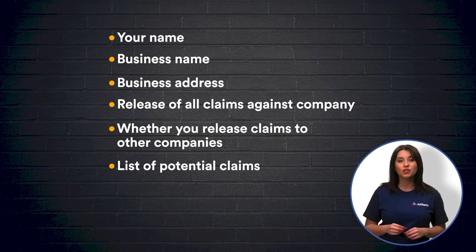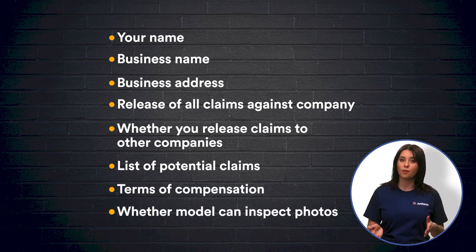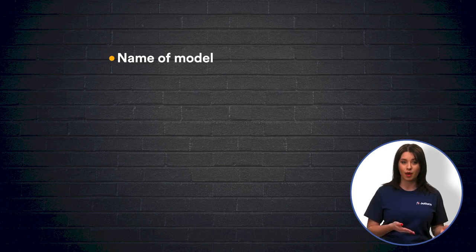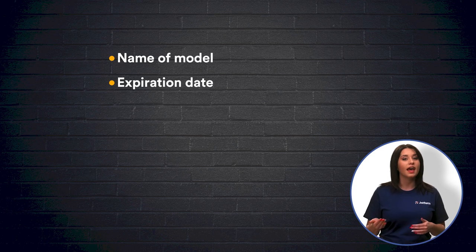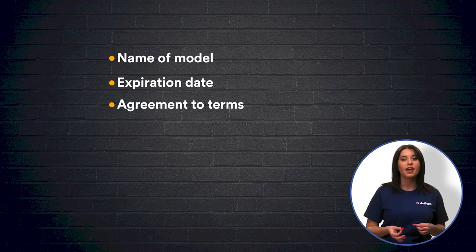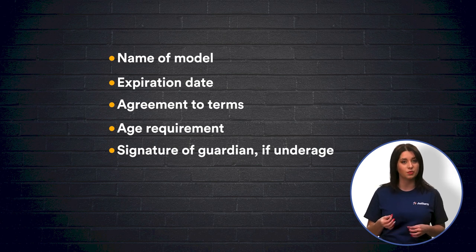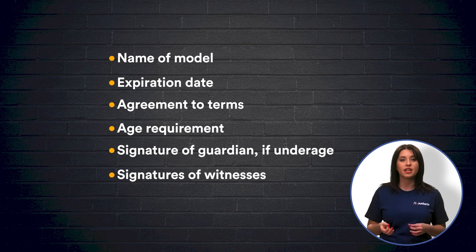You'll also want to include compensation terms, whether the model will be allowed to inspect the photos prior to publication, the name of the model as well as whether their name can be published, whether the release form has an expiration date, an affirmation that the model understands and agrees to the terms, an acknowledgement that the model signing is at least 18 years of age, and if not, that a guardian signature is present. There should also be a place for witness signatures as well as dates indicating when the form was signed.